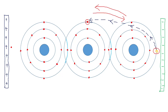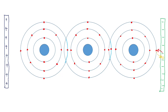Once the hole reaches the end near the negative terminal of the electric field, since the hole is a positive charge particle, it is attracted by the negative terminal. The negative terminal, being full of electrons, supplies an electron that comes and fills the hole, effectively sending the hole to the negative terminal.